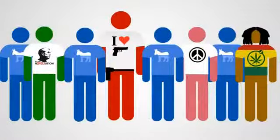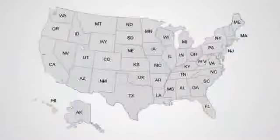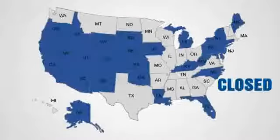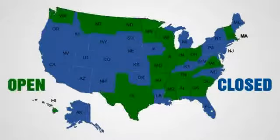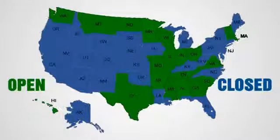Again, here's the list of states. If you live in one colored blue, you're in a closed state and must register Republican as soon as possible. If you live in one colored green, you do not, but don't forget to go to the primary or caucus on the right day.